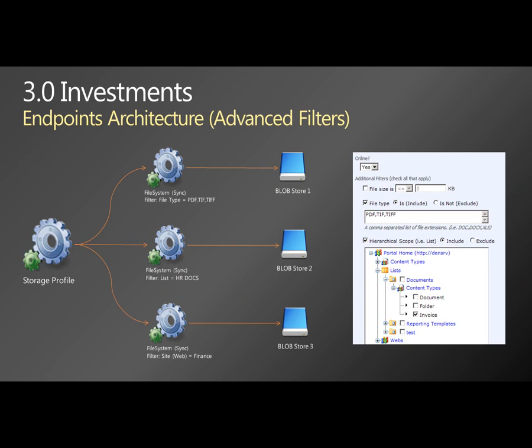Another big improvement is the ability to do some pretty advanced filtering on what content you put where. Now you can do simple scopes — like everything in a site collection goes to storage A — but you can also take the next step and scope based on file type, site, content type, or even narrow it all the way down to a specific list.